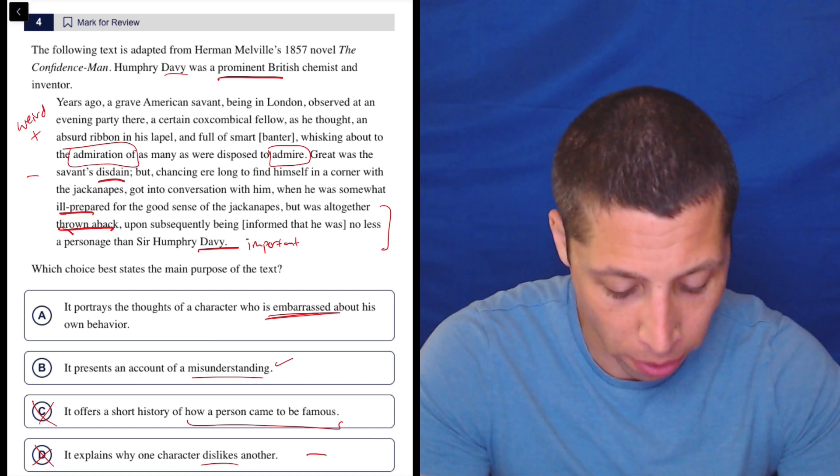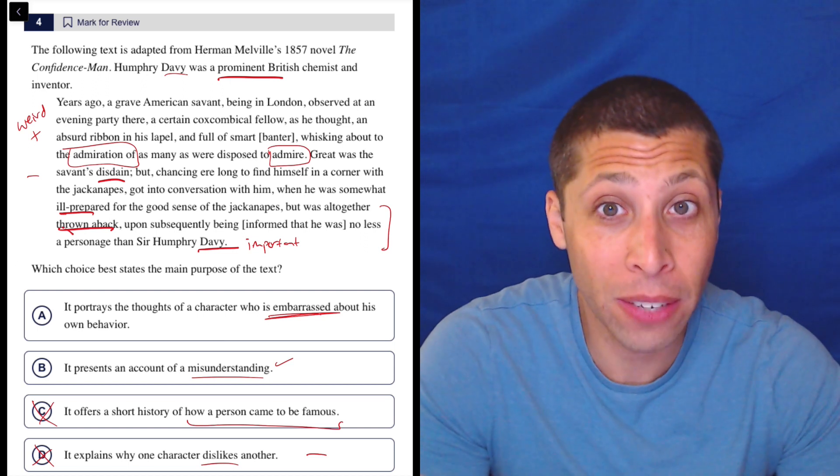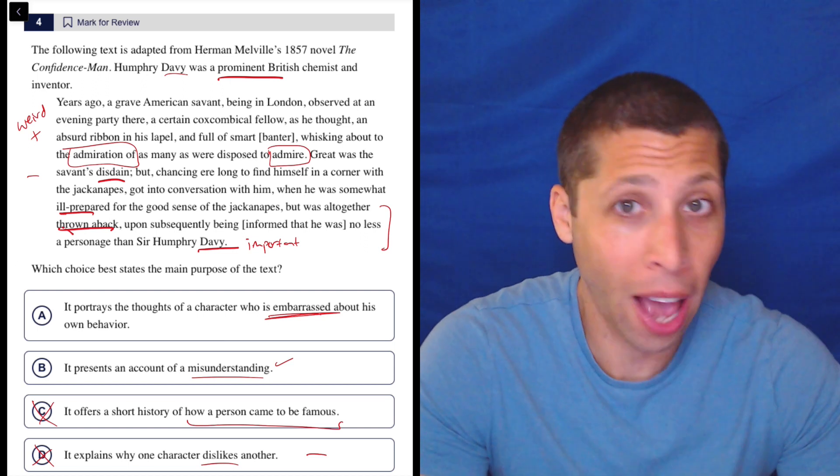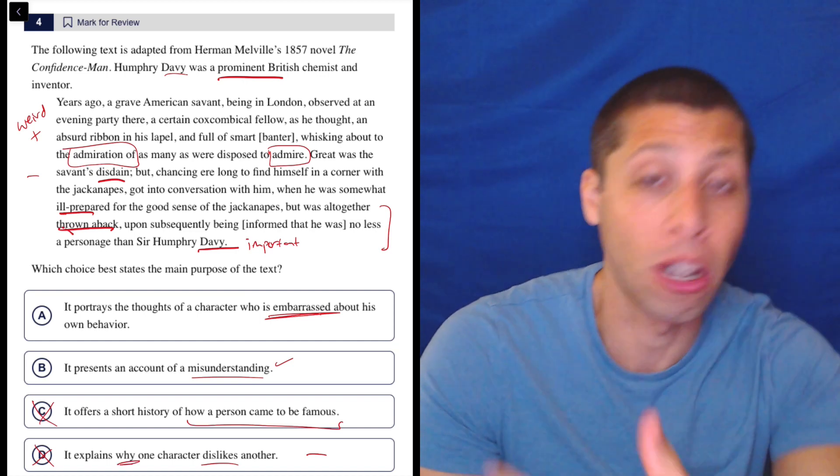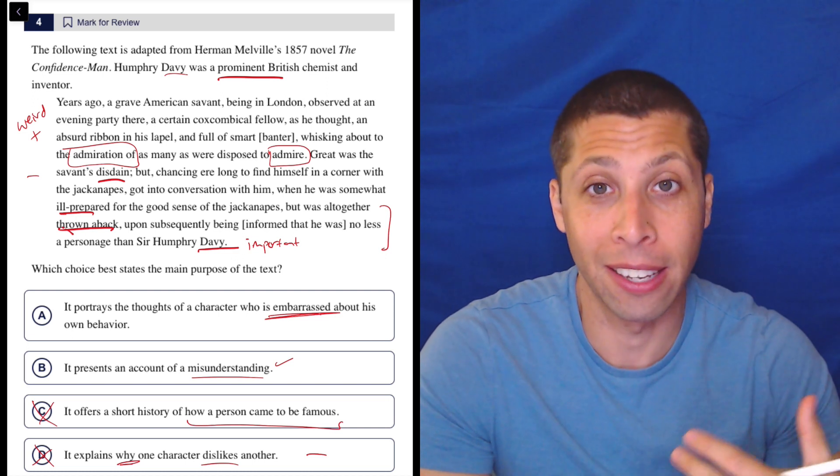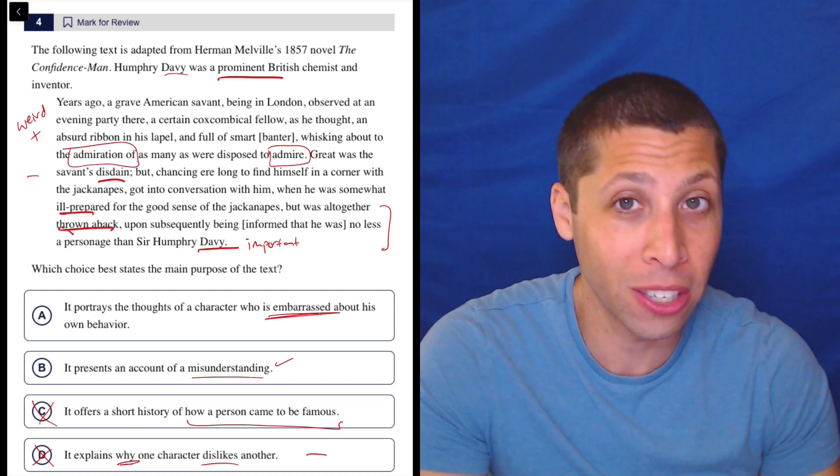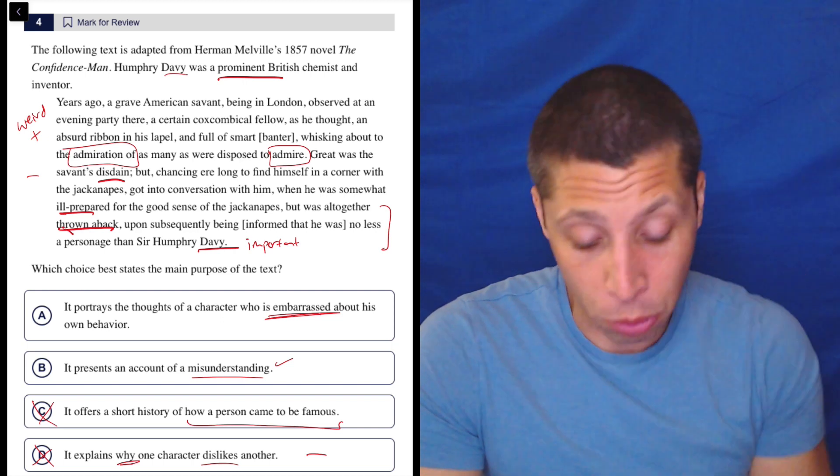I don't think so. So we can also turn that into maybe a question as well. Why, if it explains why one character dislikes another, why does the character dislike him? I don't know. Even if it says that he does dislike him, I don't think I get the why, right? Well, is it because he insulted him on some occasion? Is it because he's just generally like an unenjoyable person? I don't really know. So I would be torn between A and B.